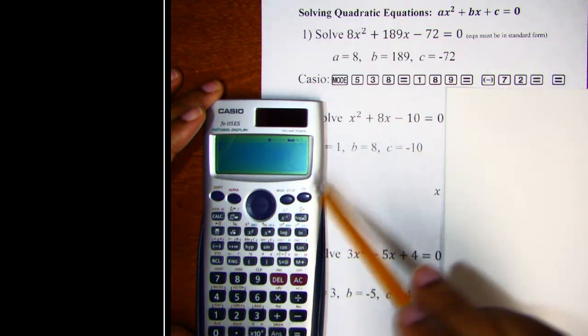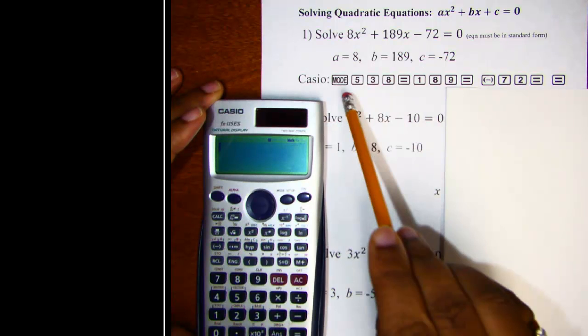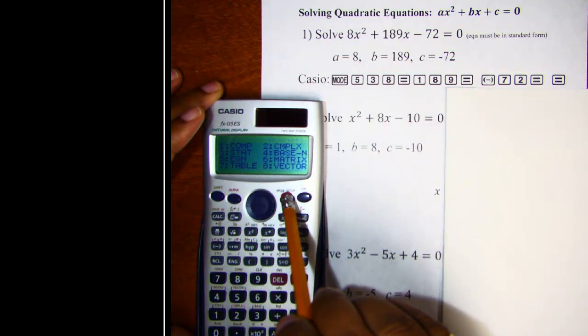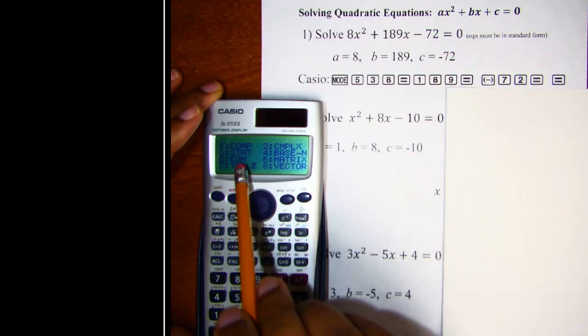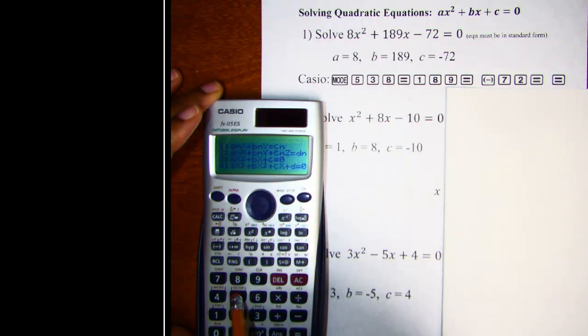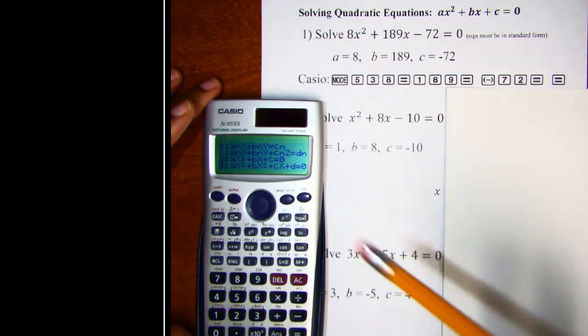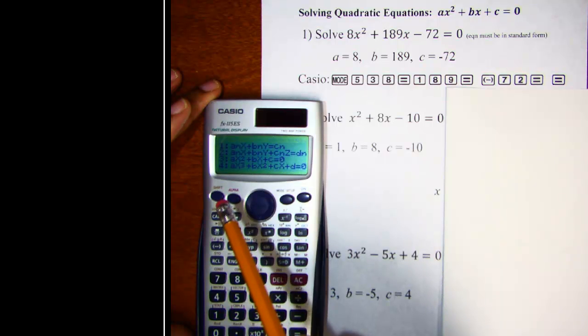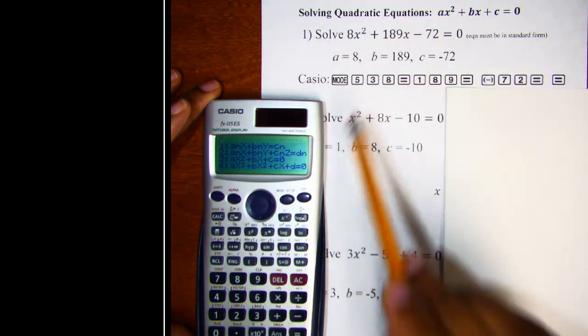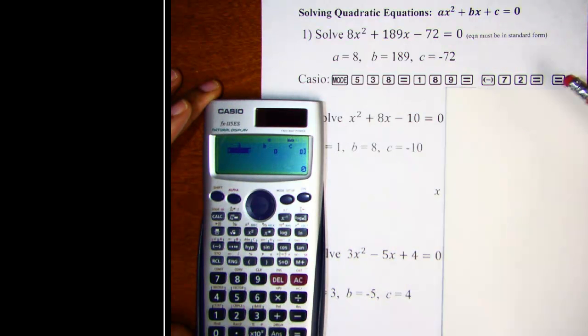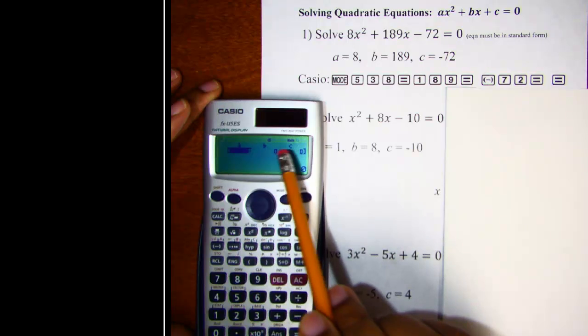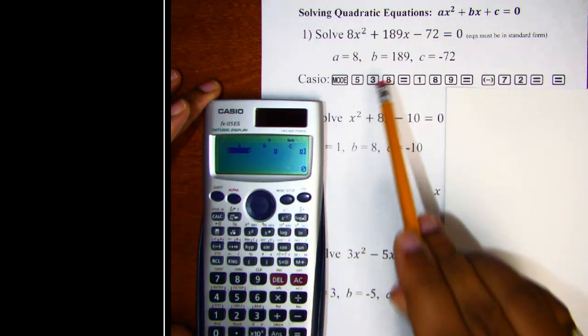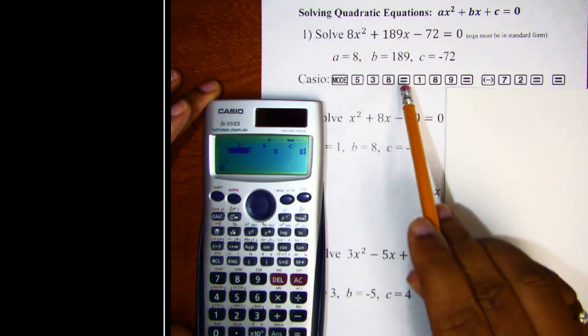Alright, so the first thing we want to do after making sure the calculator is on of course is select mode 5. So let's hit our mode key and we want the equation option. So that's number 5. And as you can see you have different equations of different forms listed here. We want the one that looks like a quadratic so that would be number 3. Alright, so now you are being asked for A, B, and C. So we said that our A is an 8 so we are going to enter in an 8 in the first position and then hit equals.